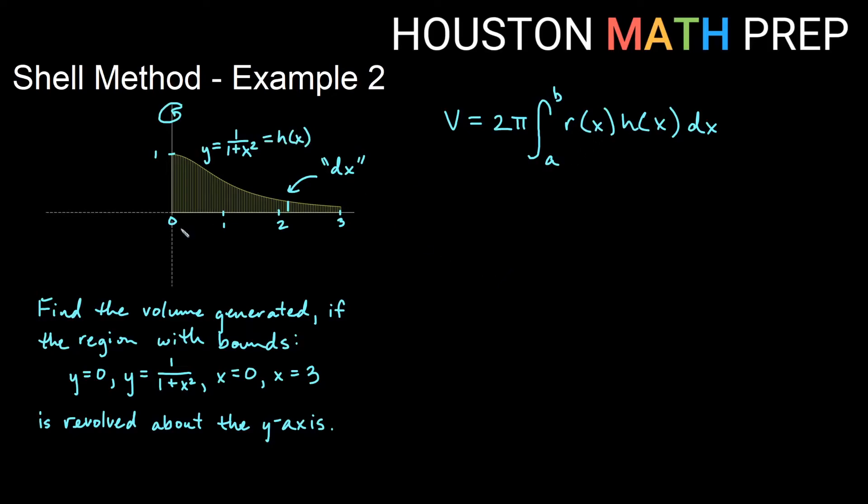And our r of x is the distance from our axis of revolution out to the rectangle. That's going to be the x distance from the axis. Here it's two point something, but in general, even if I drew my rectangle elsewhere, it would still be the x value of wherever the rectangle was, how far it is from the axis of revolution.